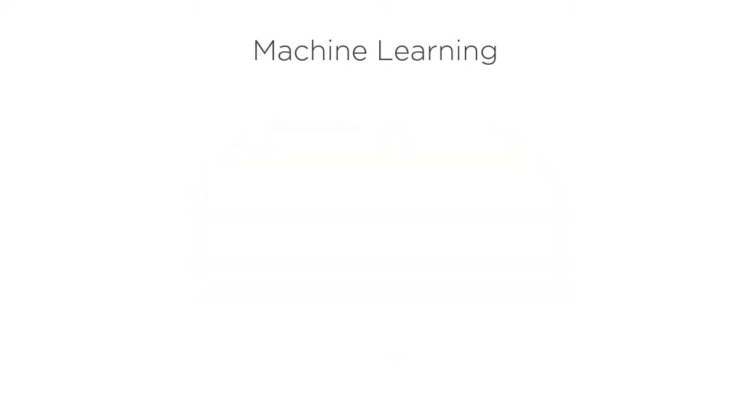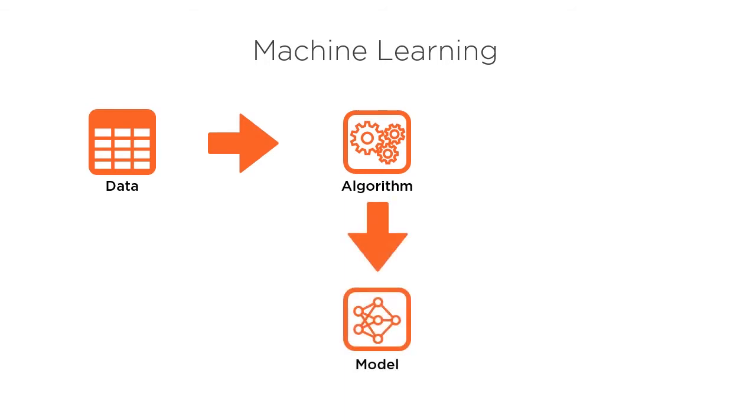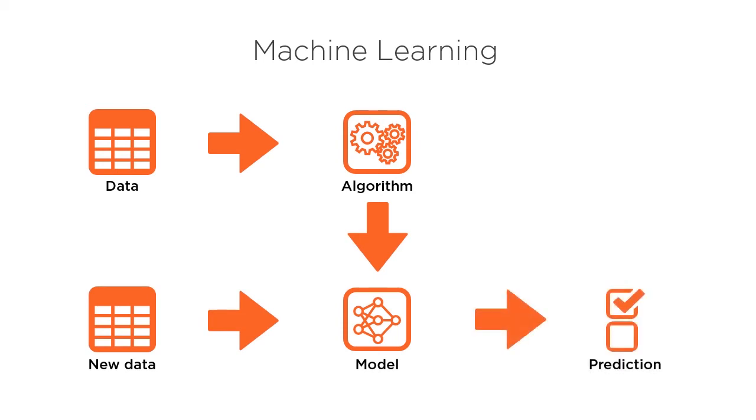Essentially, with machine learning, we use existing data and a training algorithm to learn a model of the data. We can then feed new data into that model that it's never seen before and make predictions about the new data.